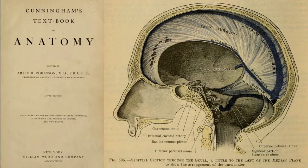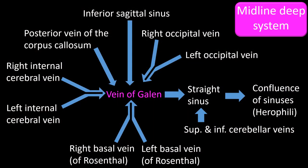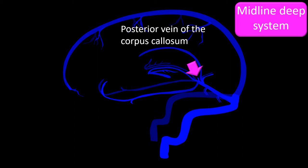This is an old drawing from Cunningham's textbook of anatomy showing several of the intracranial structures just mentioned: the inferior sagittal sinus, the vein of Galen, the straight sinus, and the confluence of sinuses. Now let's go back to the chart and name other structures feeding into the vein of Galen. These include the single midline posterior vein of the corpus callosum, which drains the splenium of the corpus callosum and surrounding areas.